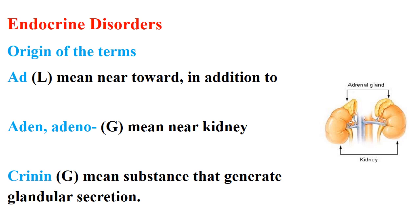An example of that is the adrenal gland, which is near the kidney, as shown in this figure. Another term is 'adene' or 'adeno', which also relates to glandular tissue near the kidney.